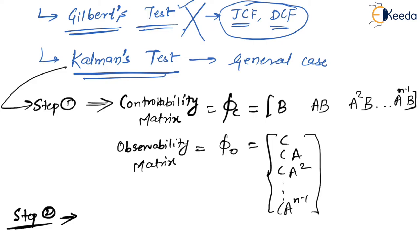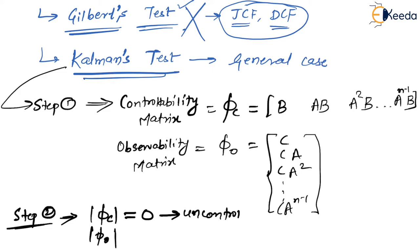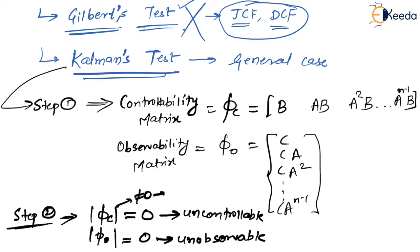Step 2: check whether these matrices Phi_C and Phi_0 are fully ranked or not. The trick is: just find the determinant of Phi_C and the determinant of Phi_0. If the determinant equals 0, then it is uncontrollable. If the determinant of Phi_0 equals 0, it is unobservable. If it is not equal to 0, then it is controllable, and if Phi_0's determinant is not equal to 0, it is observable. As simple as that.